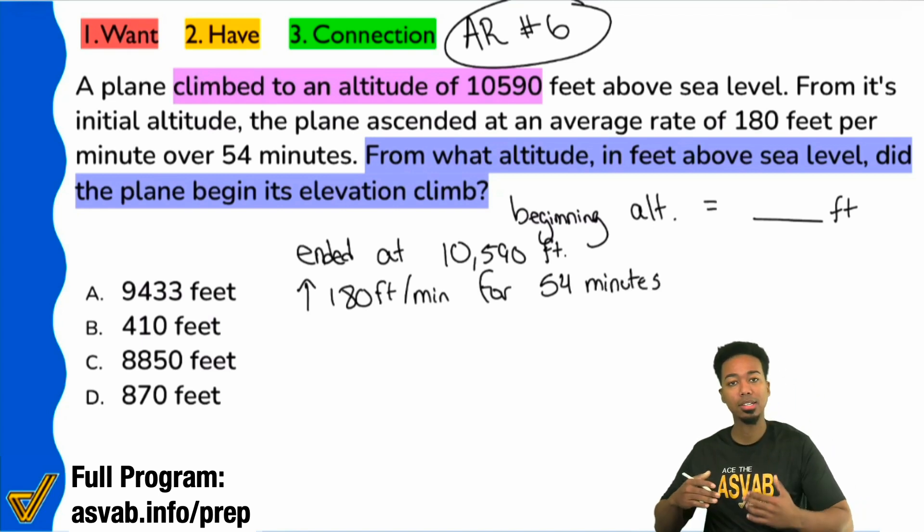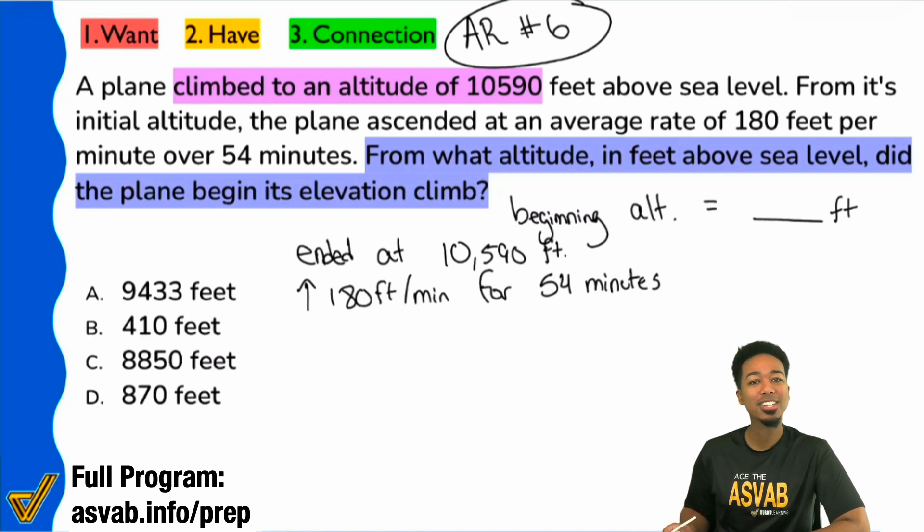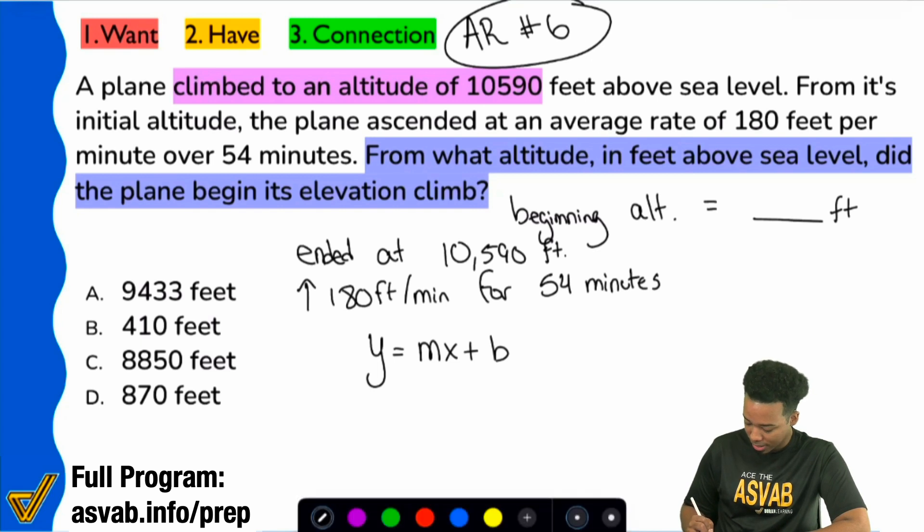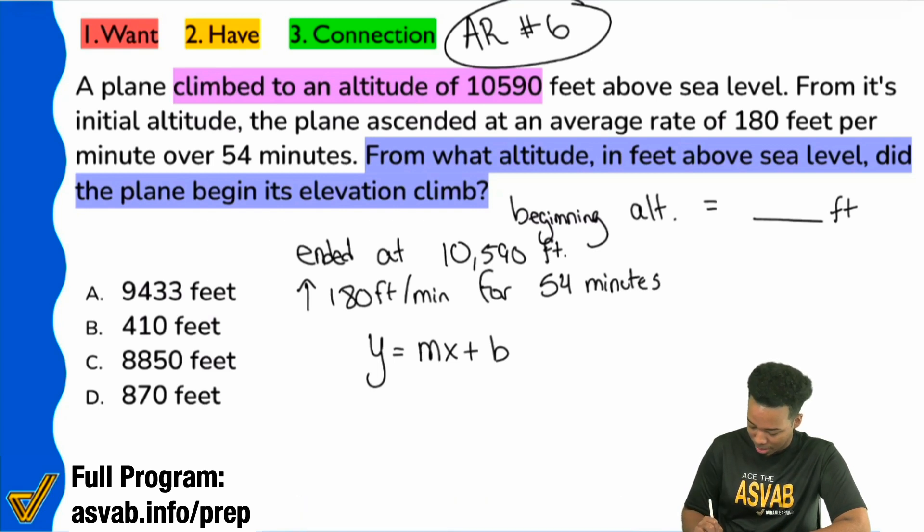So here's a classic equation that you might recognize. It's going to be y equals mx plus b. So it's going to be right over here, y equals mx plus b. And let me identify what everything means. So the y, that's going to be identified as your ending amount. Your b is your beginning amount.